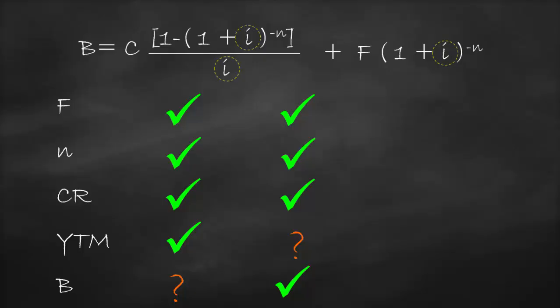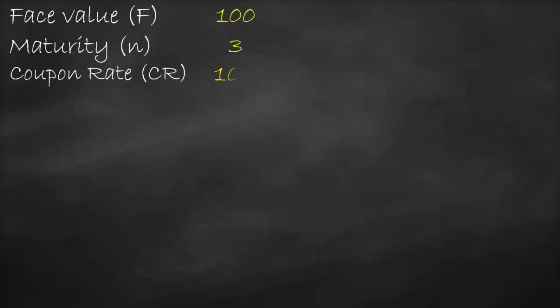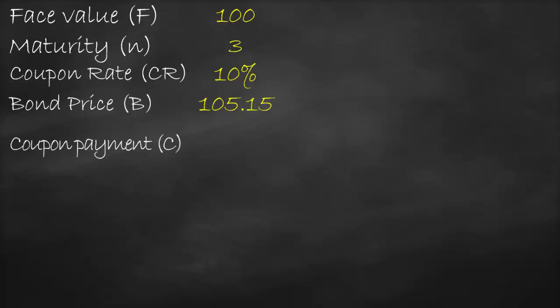Let's look at a numerical example. Assume we have a face value of 100, maturity of three years, coupon rate of 10%, and the bond is trading at a price of 105.15. Our coupon payment is coupon rate times face value, so 10% times 100, which gives us 10.